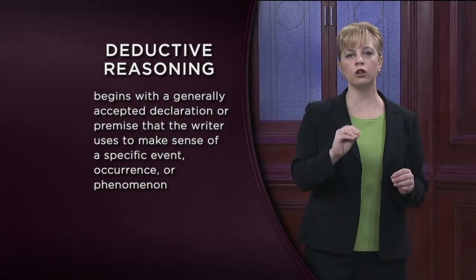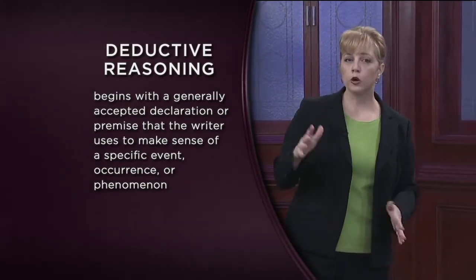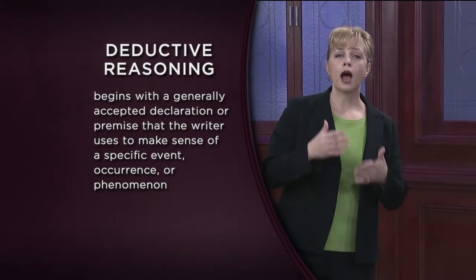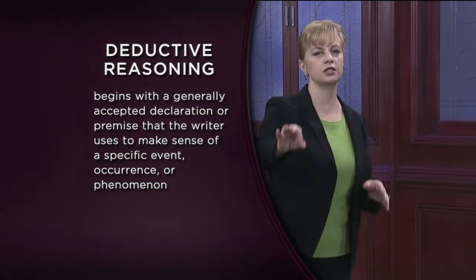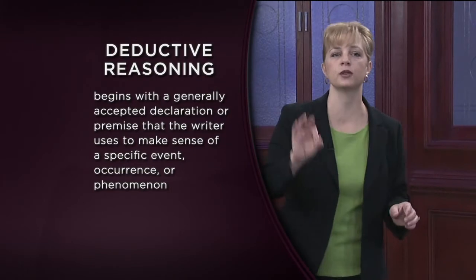Deductive reasoning begins with a generally accepted declaration or premise — something that most people take to be true most of the time. The writer then uses that premise to make sense of a specific event, occurrence, or phenomenon. In most Sherlock Holmes stories, the detective relies on what he knows to be generally true — things like, a certain type of mud can only be found in a certain region of England — and then uses this knowledge to make sense of individual clues. If that type of mud appears on a man's shoes, we can reasonably deduce that the man, or at least his shoes, were recently in that part of England. When we reason deductively, we reason from the general in order to make sense of the particular or specific.